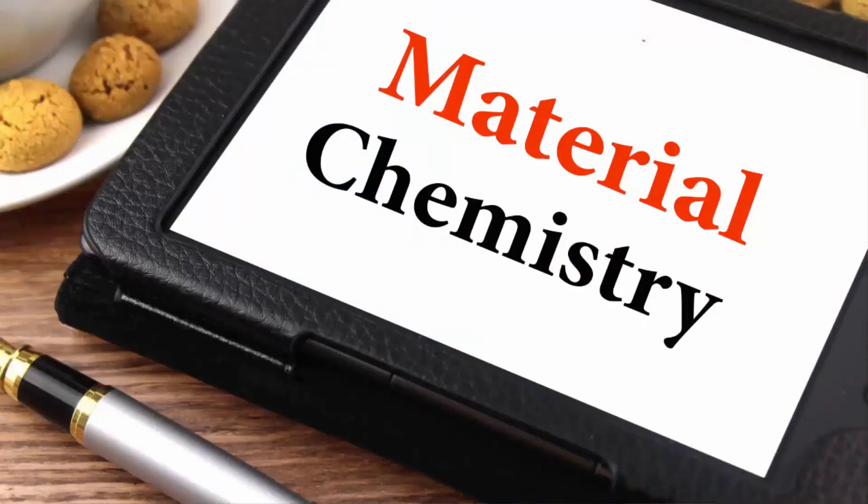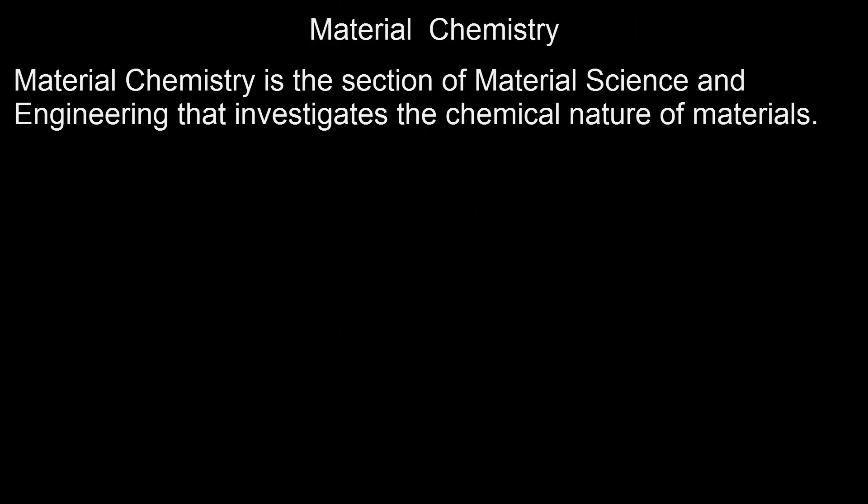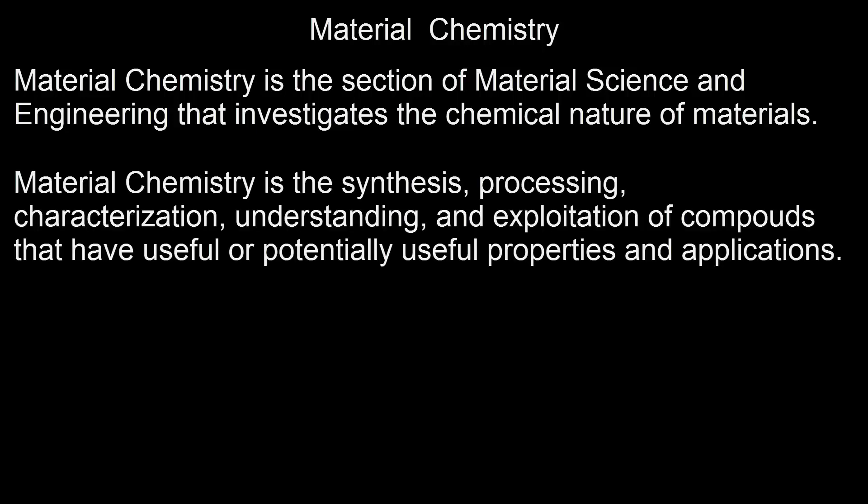The next derived branch is material chemistry. Material chemistry is where we combine material science and chemistry to investigate the chemical nature of materials. Basically, material chemistry involves the synthesis, processing, characterization, understanding, and exploitation of compounds that may have useful or potentially useful properties and applications.